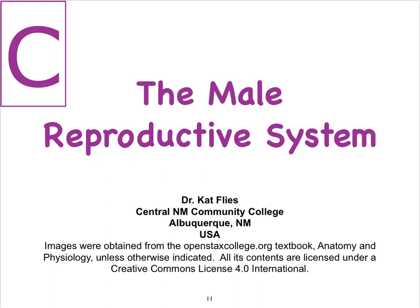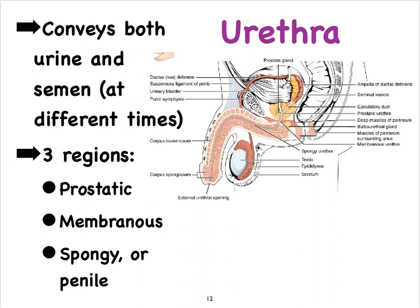Hello, I'm Kat Fleece from Central New Mexico Community College. Welcome to video C of the male reproductive system. Here we're going to focus on the different regions of the urethra as well as the erectile tissues in the penis. The urethra in the male has a dual function — it arises from the bladder so it guides out urine, but it also collects sperm cells and seminal fluid together to form semen, which is ejaculated.